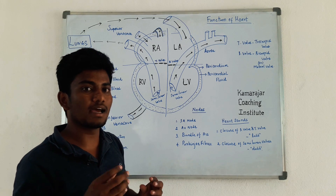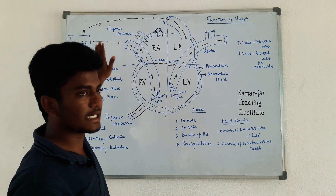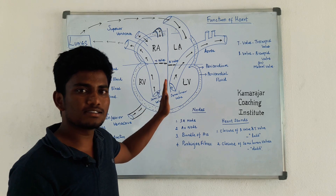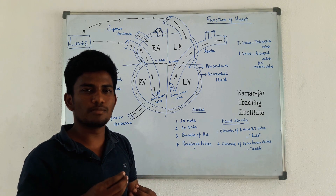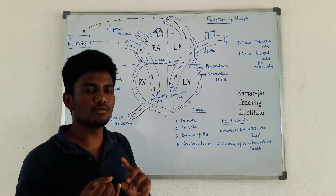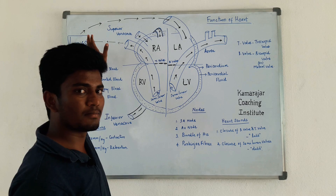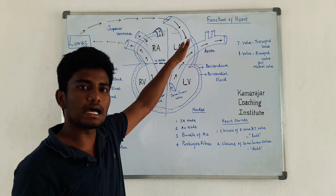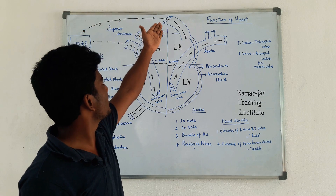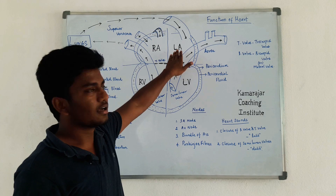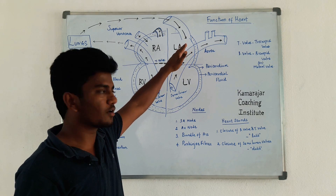The pulmonary artery carries deoxygenated blood with CO2 and hemoglobin from the right ventricle to the lungs. In the lungs, the blood is oxygenated. It then comes back to the left atrium through the pulmonary vein as pure, oxygenated blood.